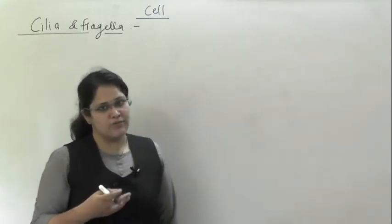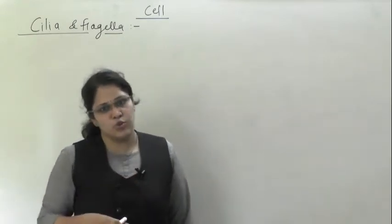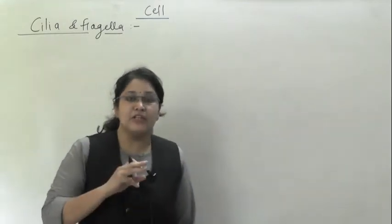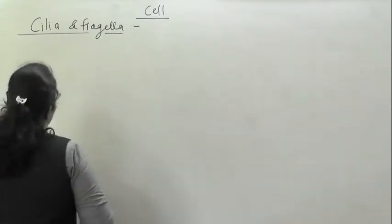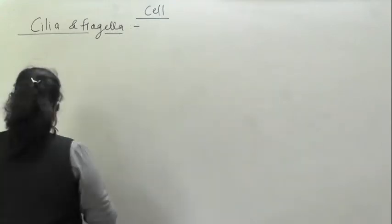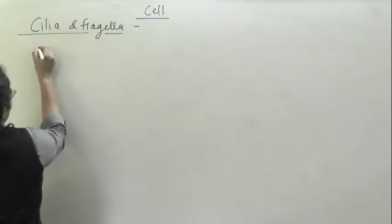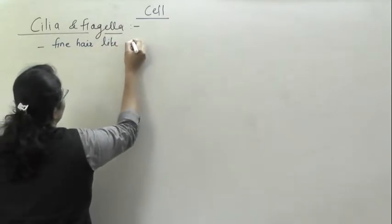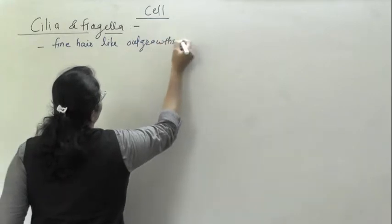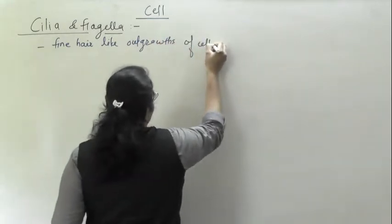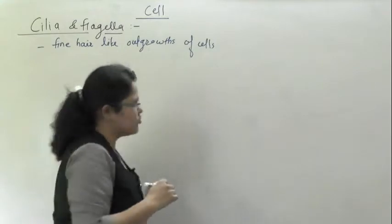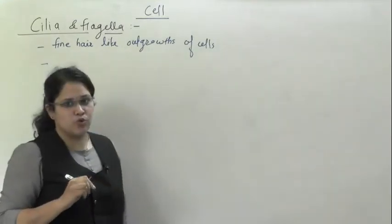Both cilia and flagella are involved in the movement of cell, but there are some important differences between these two structures. We will mention some things for cilia and flagella and then see the differences in detail. These are fine hair-like outgrowths from the cell membrane, although there is also a difference in the length of cilia and flagella.